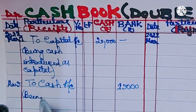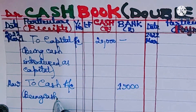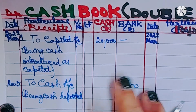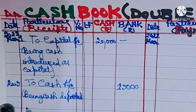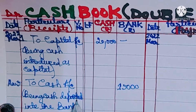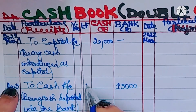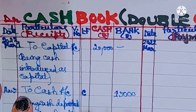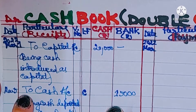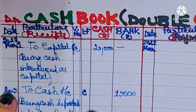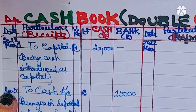The narration: being cash deposited into the bank. We always write 'C' in the ledger folio (LF) column. Contra entries are always denoted by writing the letter C in the LF column on both sides of the cash book. This indicates that no posting in respect of cash account or bank account is necessary in the ledger.